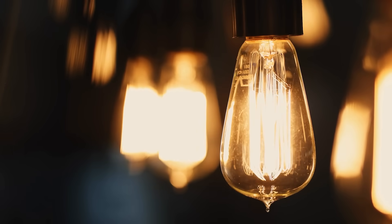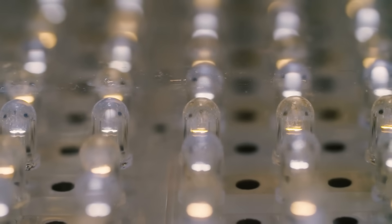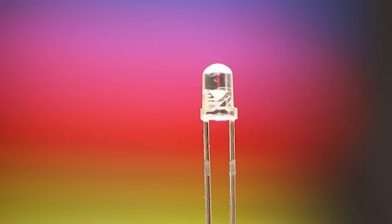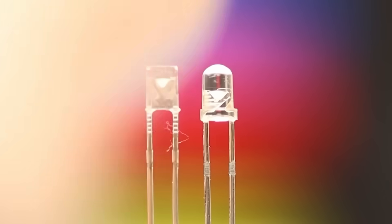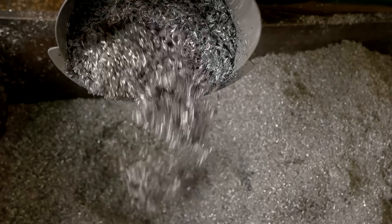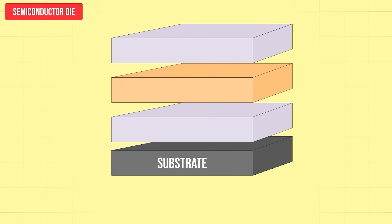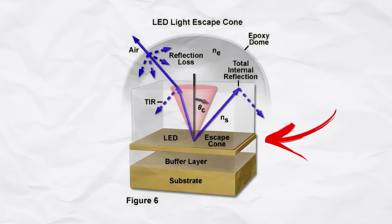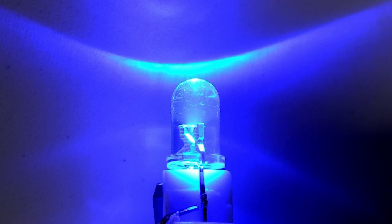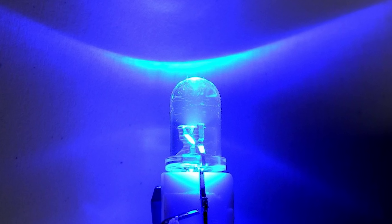Unlike traditional bulbs that burn filaments or rely on gases, LEDs are solid-state devices. They're made by layering ultra-thin sheets of materials, typically gallium compounds, on top of a base called a substrate. These materials are doped with atoms to create regions of positive and negative charge, forming a junction. It's at this junction where light is born.